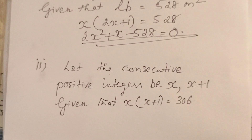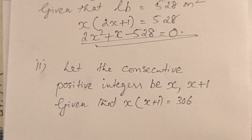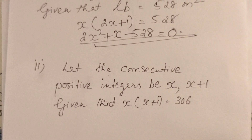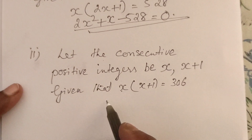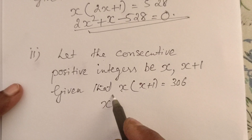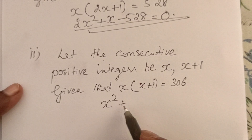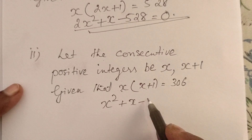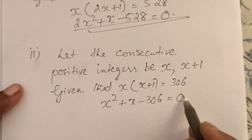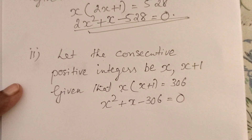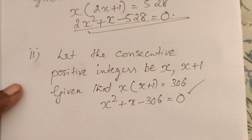That is equal to 306. In the quadratic equation: x into x gives x², plus x, minus 306 equals 0. This is the quadratic equation required.